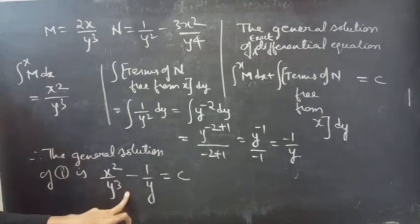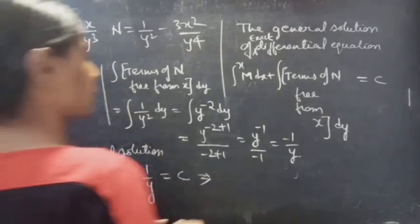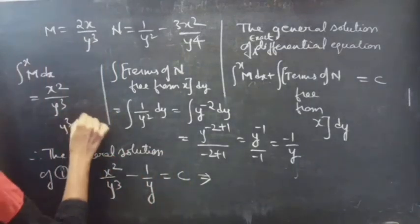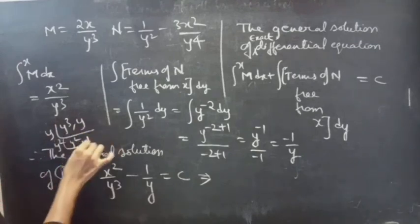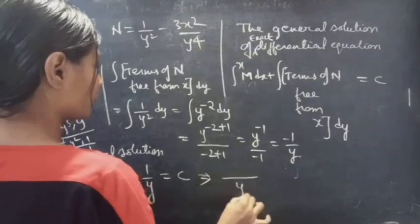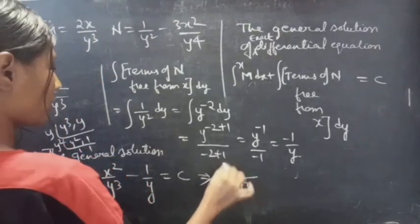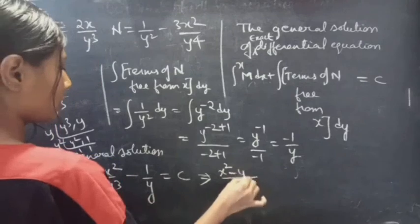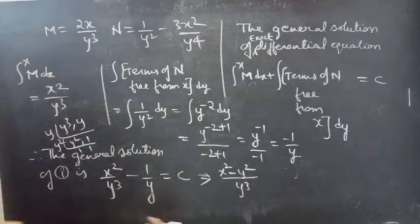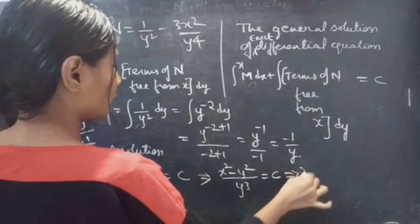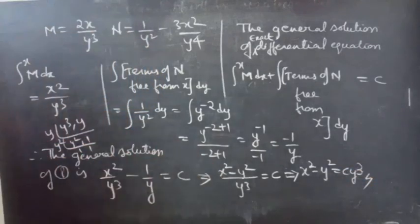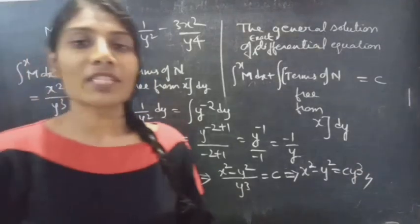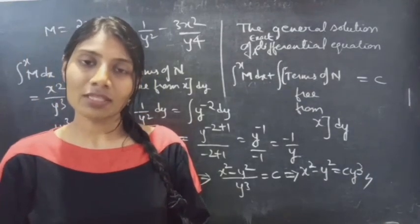Therefore, the general solution is x²/y³ − 1/y = C. Taking y³ as the common denominator gives (x² − y²) / y³ = C, so x² − y² = C · y³. This is the required general solution. We have seen a problem from exact equations in this video. Hope you will understand. We will see you in the next video.